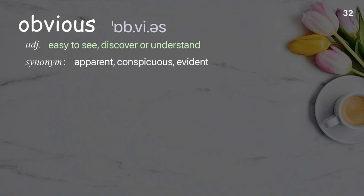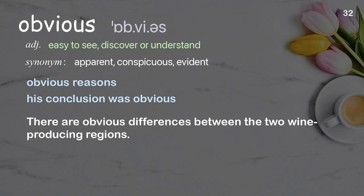Obvious: Easy to see, discover, or understand. Examples: obvious reasons, his conclusion was obvious. There are obvious differences between the two wine-producing regions.